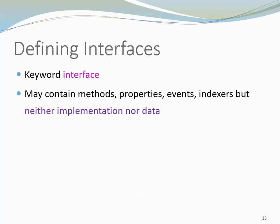Now I want to talk a little bit about defining interfaces. When you define an interface, you need the keyword interface. In C#, interfaces may contain methods, properties, events, and indexers — but no implementation and no data. So this is different from Java. In C#, we have no constants and no nested types either.